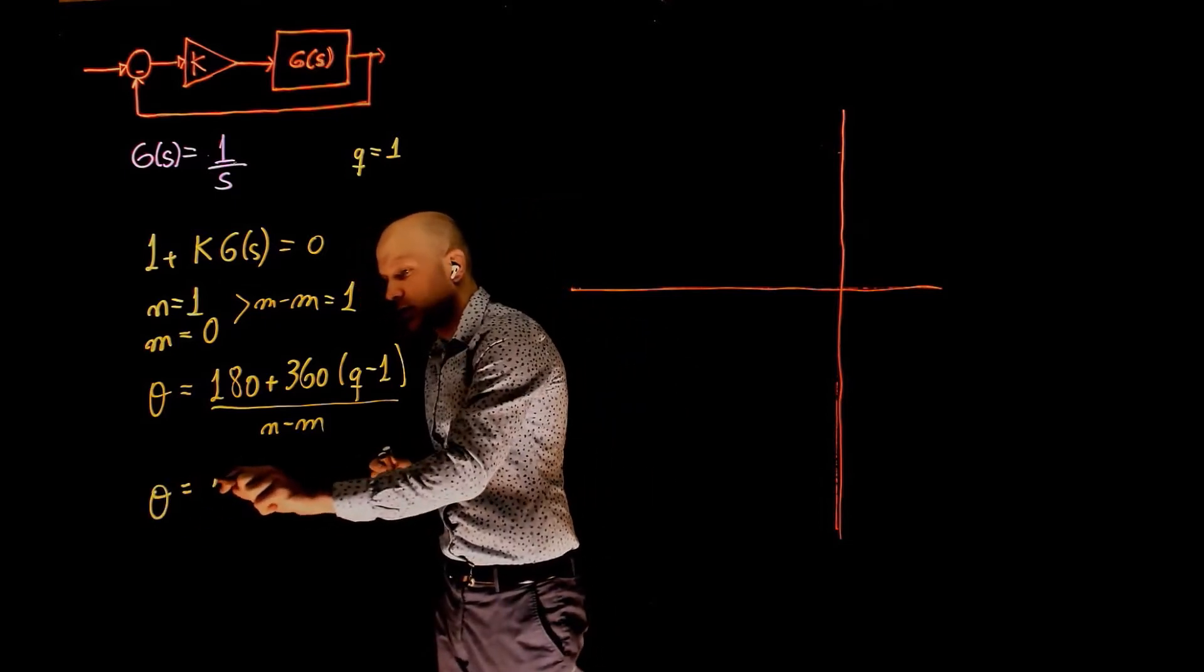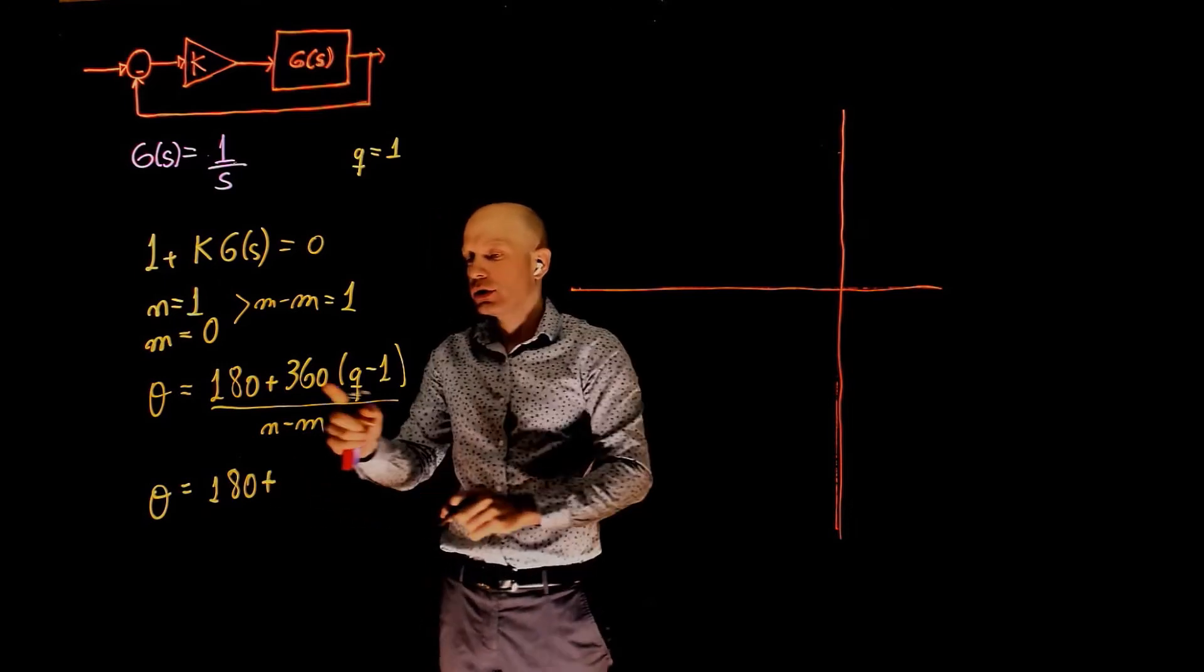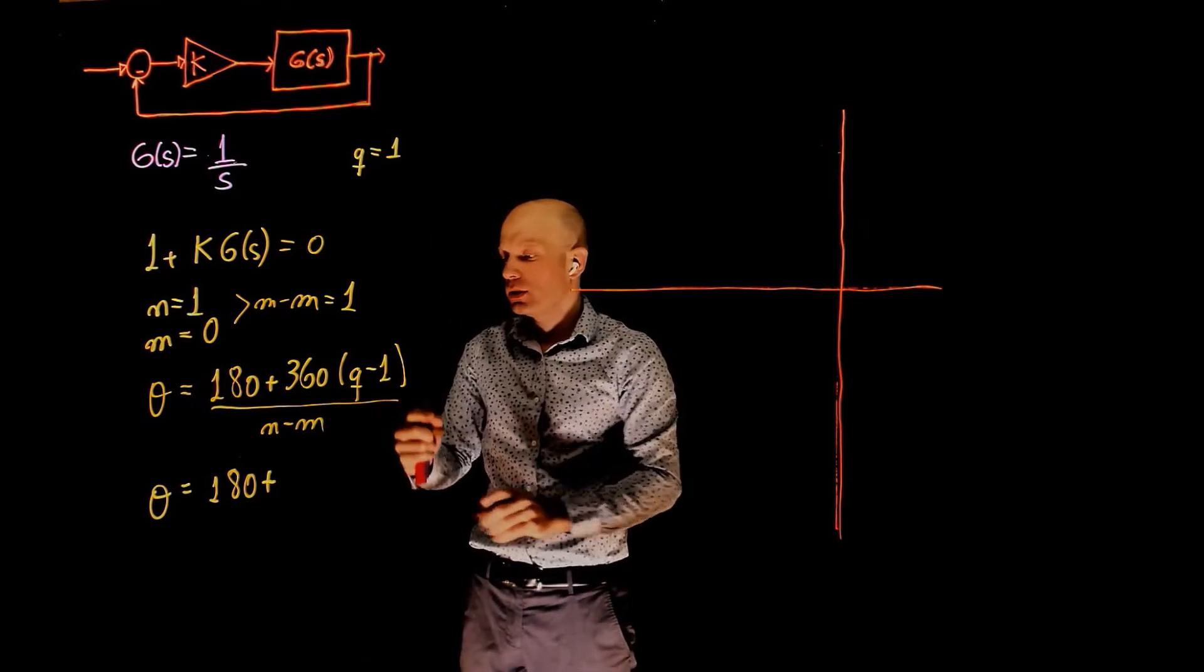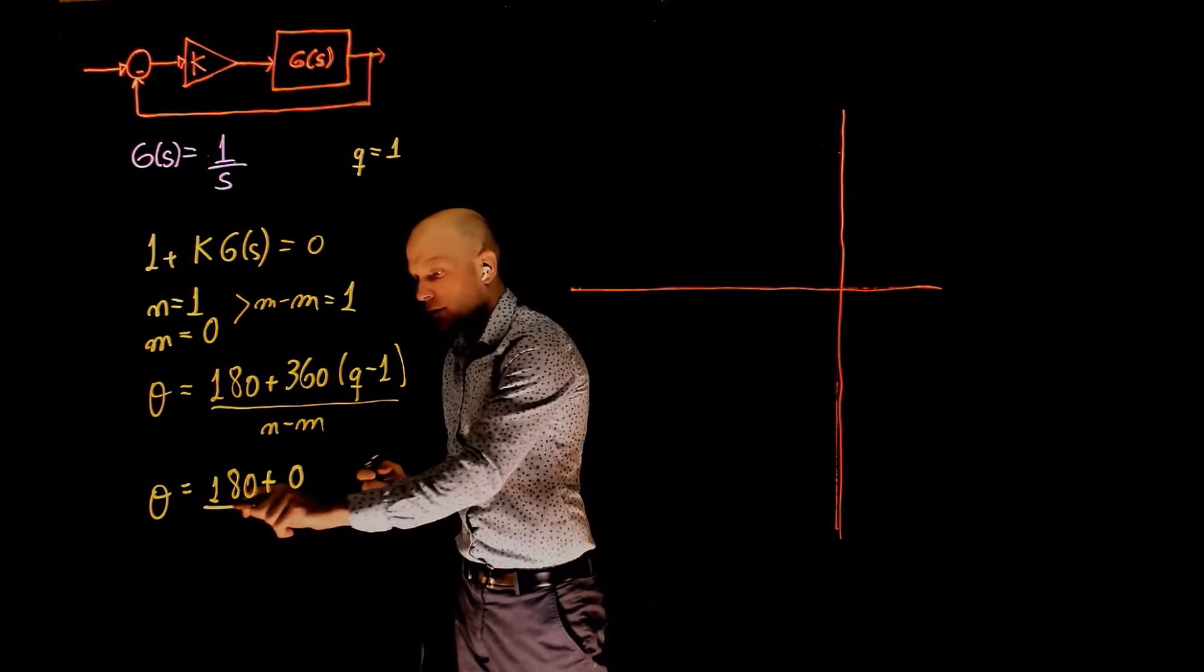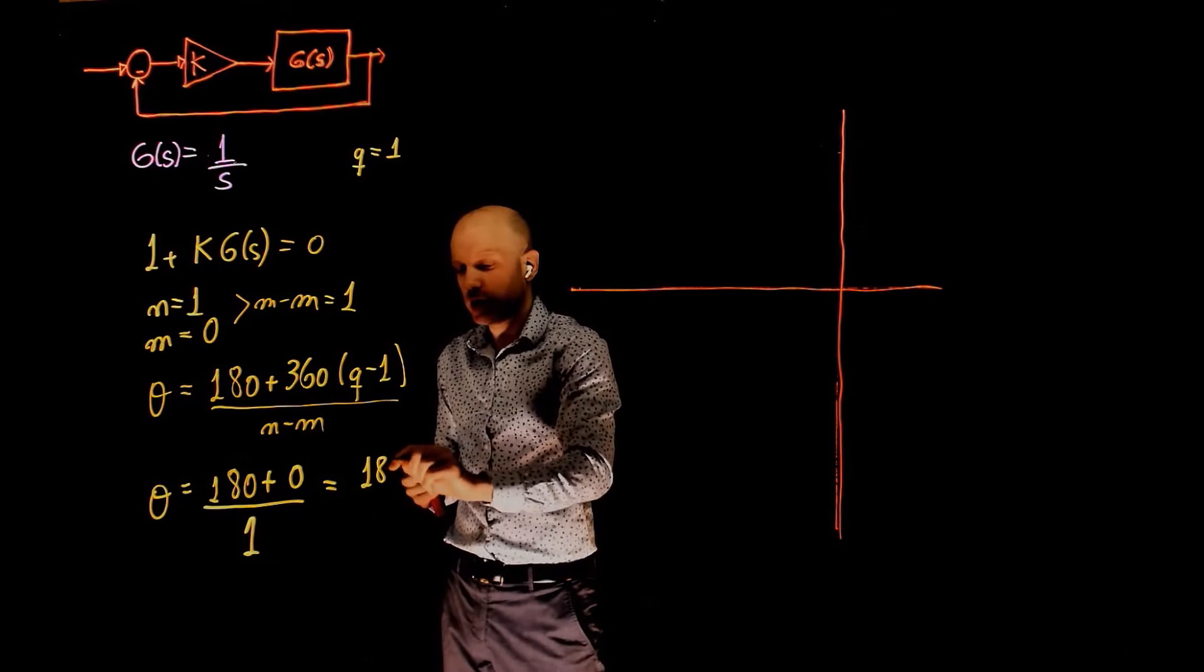Theta in this case is then 180 plus 360 times q minus 1. This is 0 divided by 1, and this equals 180 degrees.